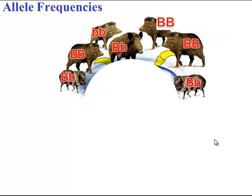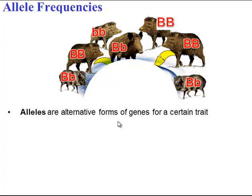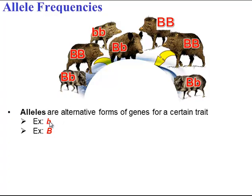To know if a population is evolving, you have to analyze its gene pool. One way to do that is to look at allele frequencies. Alleles are alternative forms of genes for a certain trait. Here we have the trait of coat color — some coats are brown and some are gray. The recessive allele contributes to a gray coat color, and the dominant allele contributes to a brown coat color.